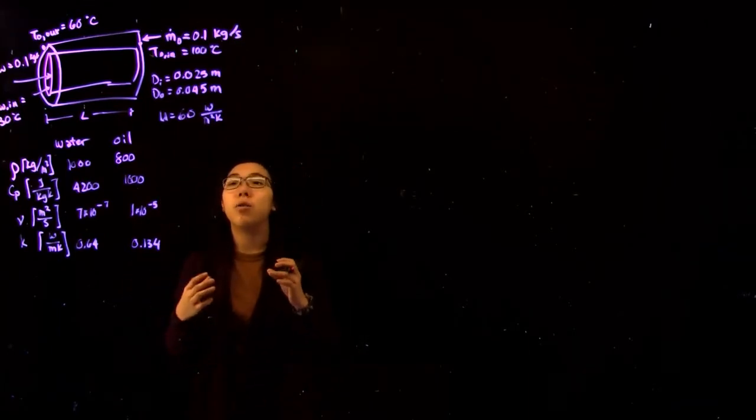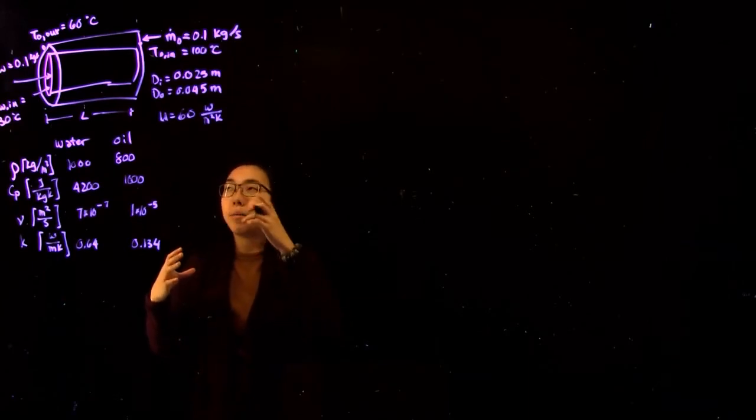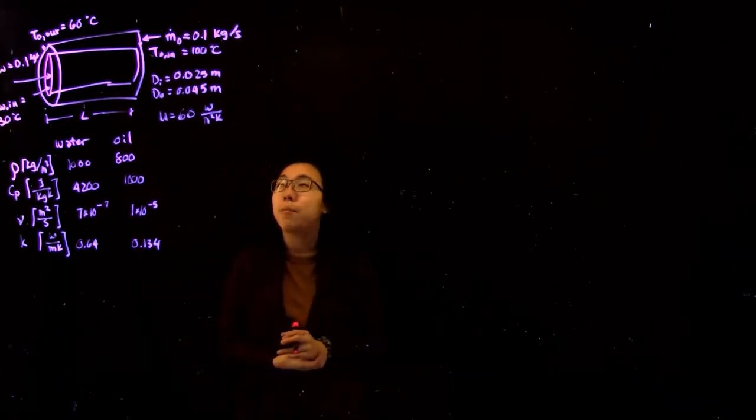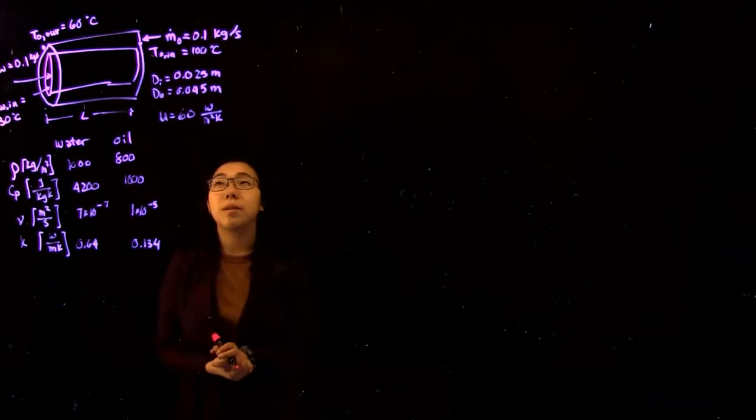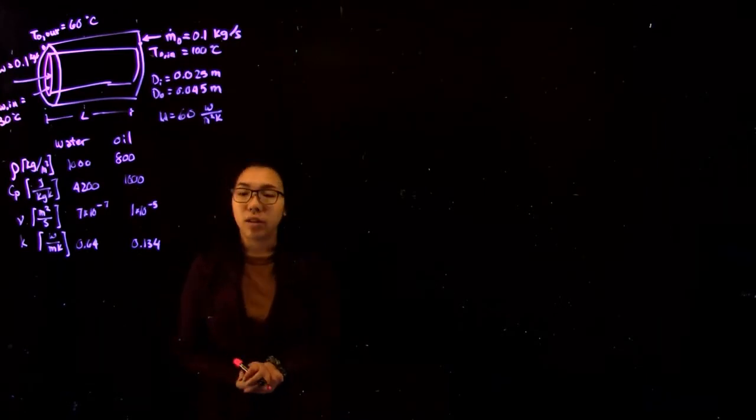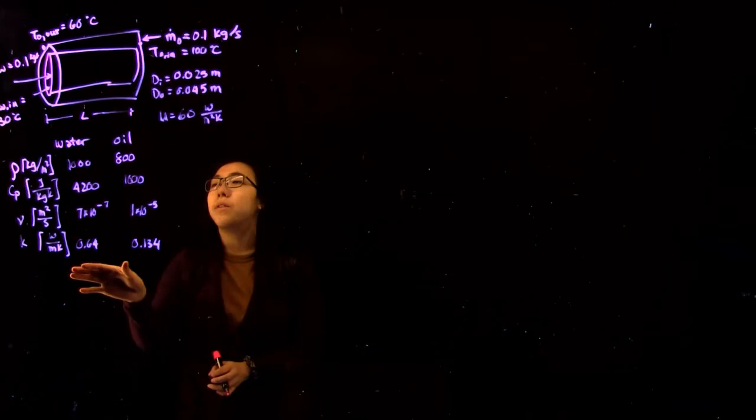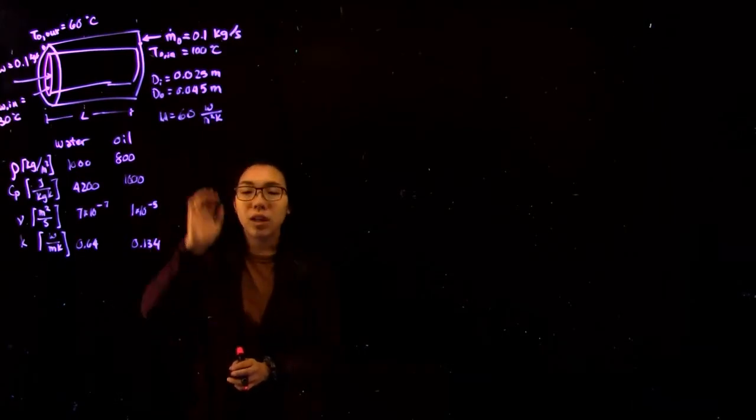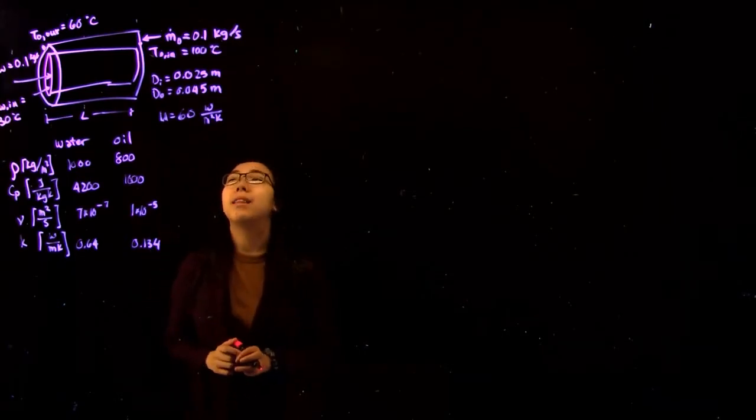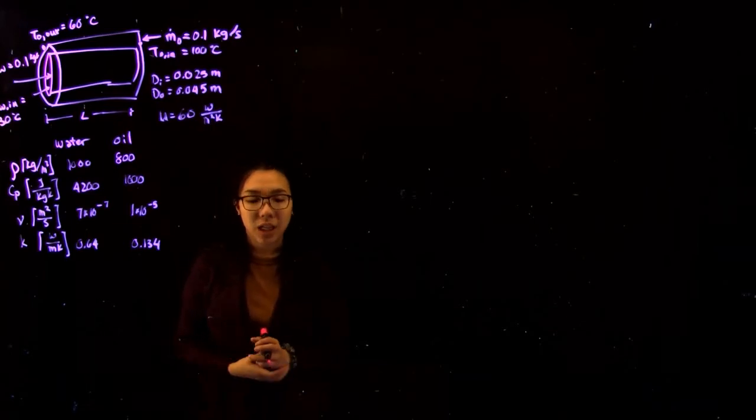We then have hot oil on the outside surrounding the center on the outer shell, also flowing at 0.1 kilograms per second and an inlet temperature of 100 degrees Celsius. We're given the fluid properties, the heat transfer coefficient U, and the inner and outer diameters of this heat exchanger.